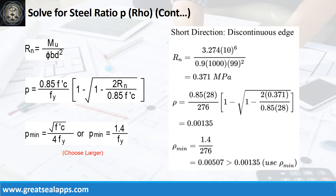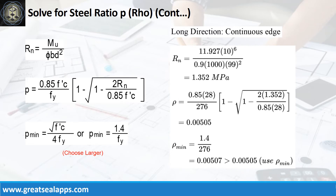Given short direction, discontinuous edge moment equals 3.274 kN/m. Resistance factor equals 0.9, b equals 1000 mm, and d equals 99 mm. The beam design ratio RN equals 0.371 MPa, and reinforcement ratio rho equals 0.00135; use rho minimum of 0.00507. Given long direction, continuous edge moment equals 11.927 kN/m. Resistance factor equals 0.9, b equals 1000 mm, and d equals 99 mm. The beam design ratio RN equals 1.352 MPa, and reinforcement ratio rho equals 0.00505; use rho minimum of 0.00507.